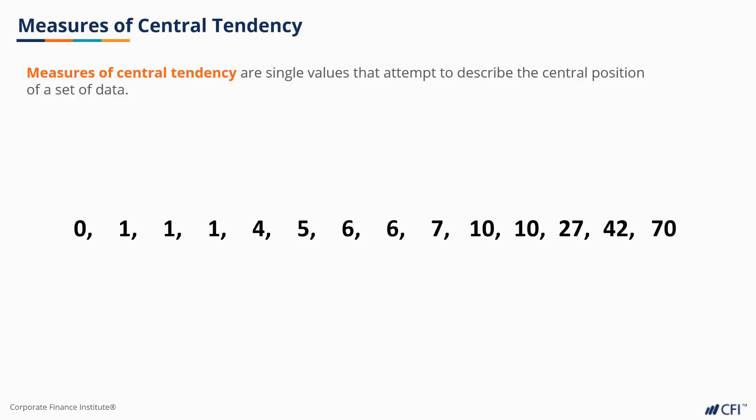Measures of central tendency attempt to identify the central position of our data. There is the mean, which tells us the average of our data, median, which tells you the middle number if we arranged our data from the smallest value to the largest, and mode, which describes the most frequently occurring number.